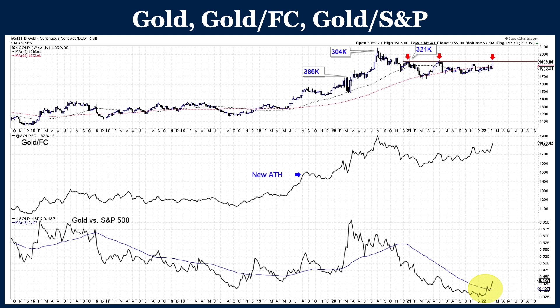Two of the three leading indicators you can see here: gold against foreign currencies and gold against the stock market. The reason gold against foreign currencies is important — another way to look at this is just gold multiplied by the dollar index. So we're evaluating gold without the impact of a falling dollar. This has been a strong leading indicator for the gold price over the last 25 to 30 years.